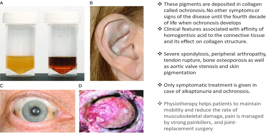Clinical features are associated with the affinity of homogentisic acid to the connective tissue and its effect on collagen structure. These include severe spondylosis, peripheral arthropathy, tendon rupture, bone osteoporosis, as well as aortic valve stenosis and skin pigmentation.